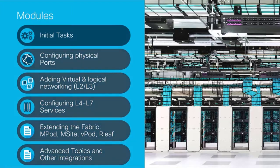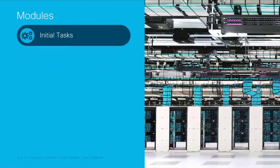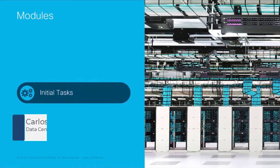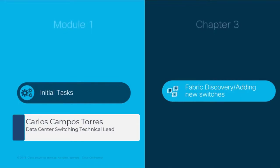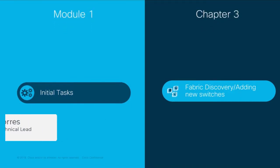Welcome to ACI, the Network Made Simple Learning Series. In this video, we will cover Module 1, Initial Tasks, Chapter 3: Fabric Discovery and Adding New Switches.